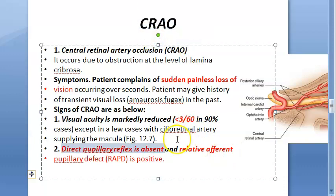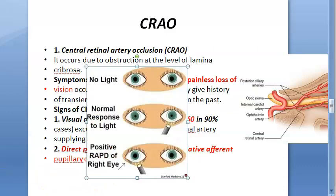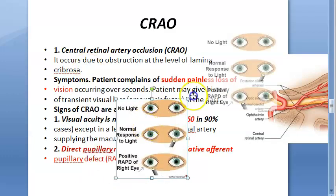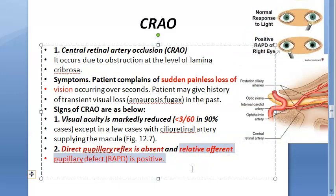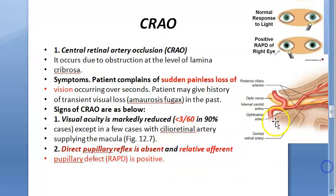Relative afferent pupillary defect — the Marcus Gunn pupil — is present, demonstrated by the swinging light test where the eye dilates when light is shone on it. RAPD is seen in ischemic CRVO and CRAO, as well as in optic neuritis, optic atrophy, and rhegmatogenous retinal detachment — conditions involving the retina and optic nerve.